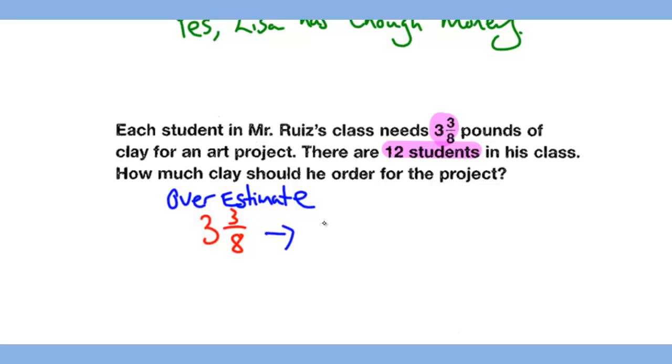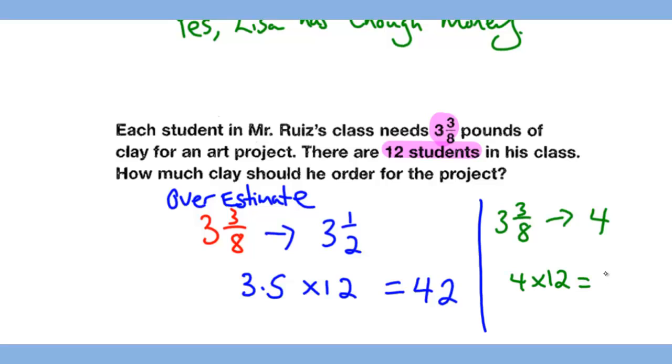3⅜ is the amount of clay per student. Estimate this up to 3½ if you're comfortable with that. If not, you can round up to 4. So you have 3½ times 12 students, which gives you 42. If you want a rougher and easier estimation, you can round 3⅜ to 4, and 4 times 12 gives you 48. That's it for the lesson.